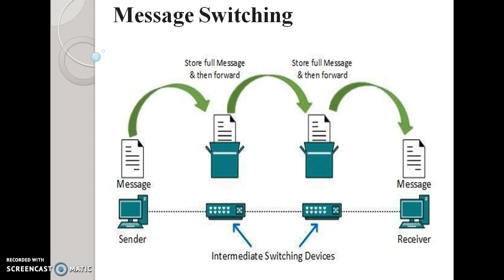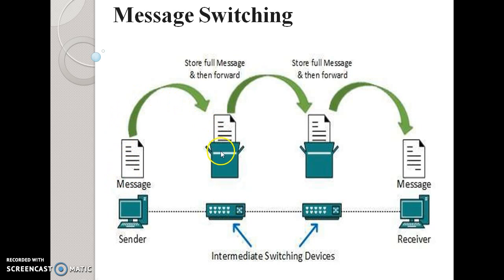When the sender sends a message, the destination address is appended to the message. Message transfer occurs in the network from node to node — the message transfers to one switch, then another switch, then passes to the destination. It is also called store and forward: each switch stores the message and then forwards it to the next switch, until it reaches the final destination.